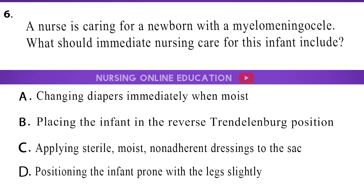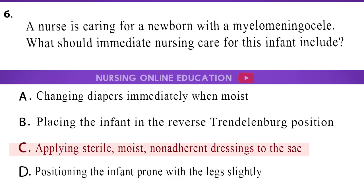Question 6. A nurse is caring for a newborn with a myelomeningocele. What should immediate nursing care for this infant include? A. Changing diapers immediately when moist. B. Placing the infant in the reverse Trendelenburg position. C. Applying sterile, moist, non-adherent dressings to the sack. D. Positioning the infant prone with the legs slightly abducted. The answer is option C: Applying sterile, moist, non-adherent dressings to the sack.